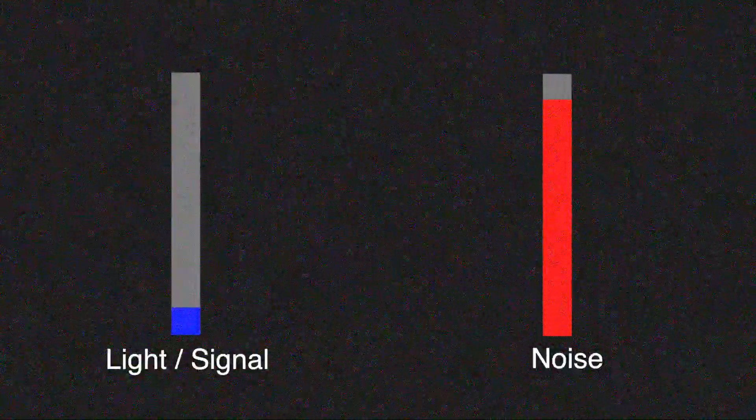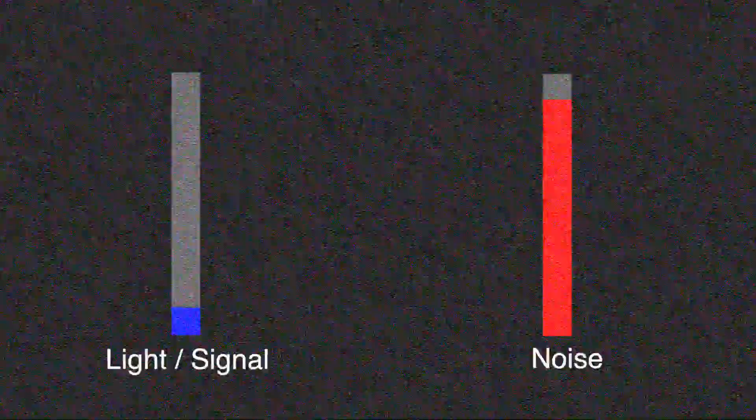So digital noise — what is it? It's that visual representation of grain that you see on old film photos. But these days, what it really is is a signal-to-noise ratio that's digitally enhanced through your device. The signal is the light coming into the sensor. The noise is the processing of the AI in the device. So the less light — the less signal — coming into the device, the more that device has to process that light to make it brighter, resulting in noise.